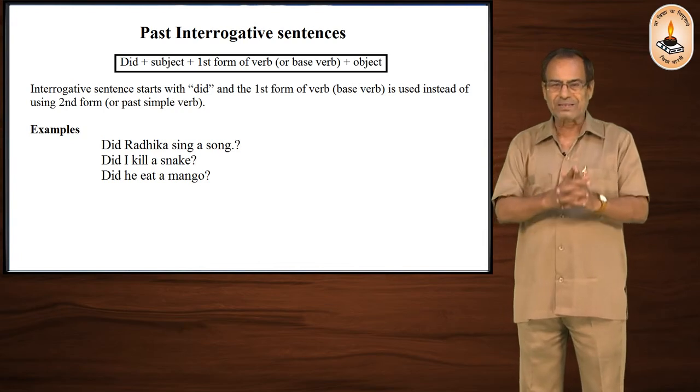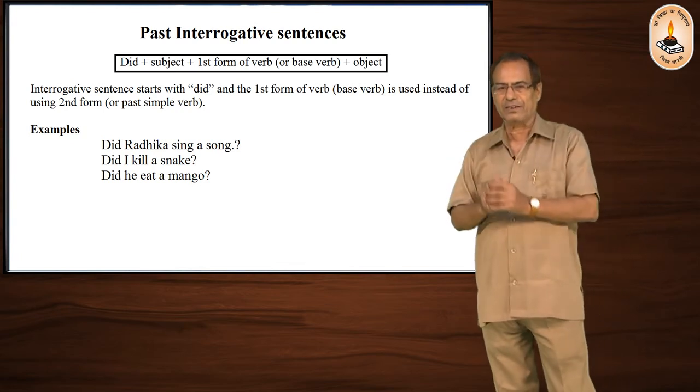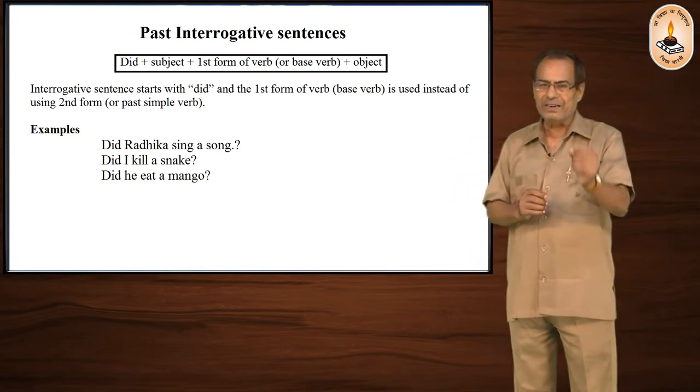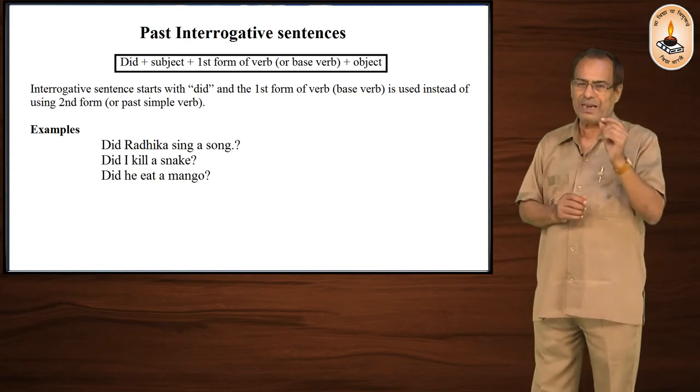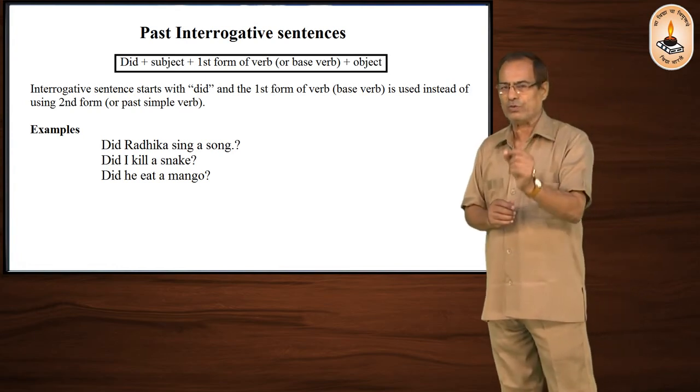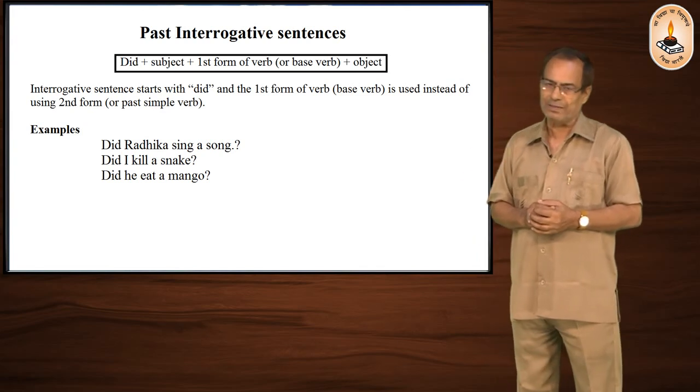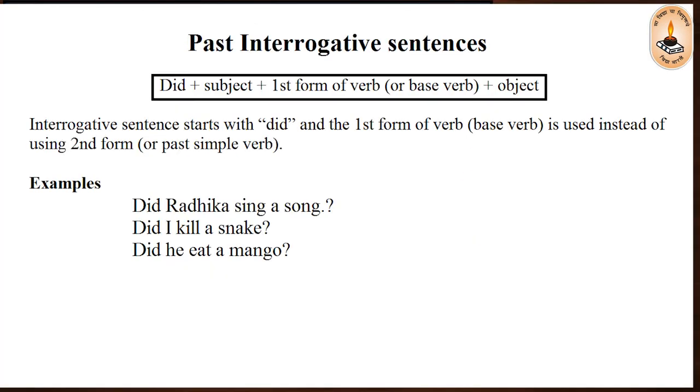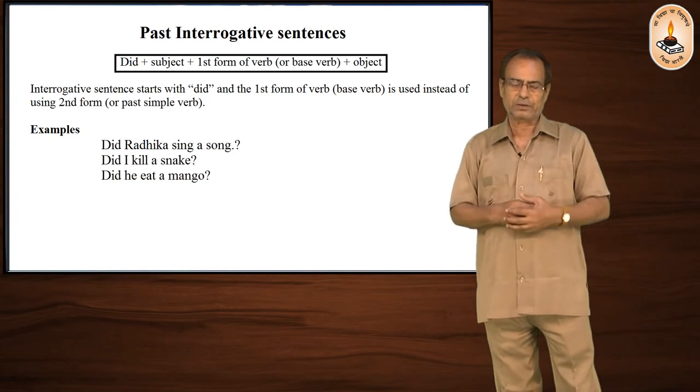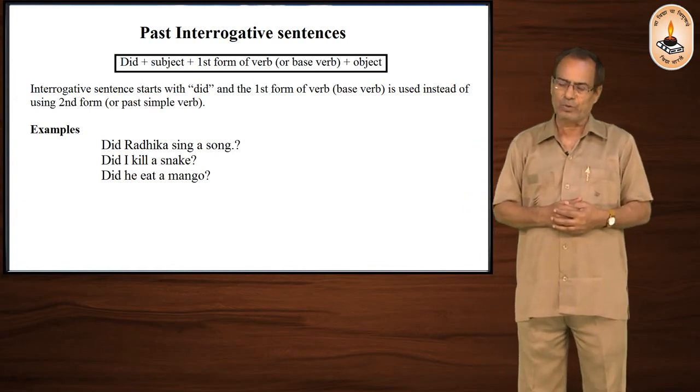In past indefinite interrogative sentence, we place did in the first place, then subject, then first form verb, and then the object or any other part. The example is: did Radhika sing a song? This sentence becomes interrogative.